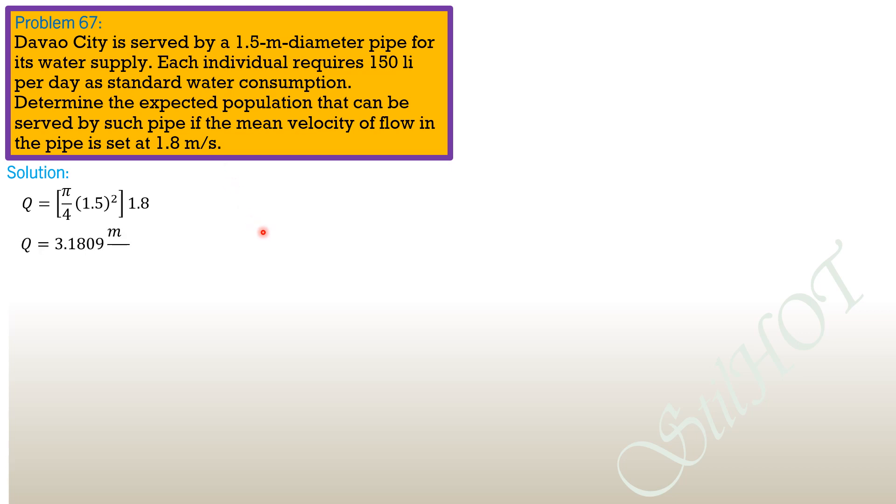Q equals 3.1809 cubic meters per second. Then Q in terms of the water requirements: for each individual, 150 liters per day or 0.15 cubic meters per day per person, multiplied by N persons, where N is the required population.